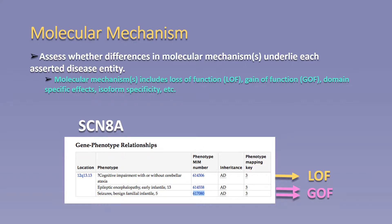The second criterion is molecular mechanism. Assessment of molecular mechanism begins at the gene level and includes differences such as loss of function versus gain of function mutations for each asserted disease entity, as observed for the example of the gene SCN8A. Other examples to consider would be domain-specific mutations or isoform-specific mutations that may occur between asserted disease entities. Sometimes the molecular mechanism is not always clear or is in question. In these cases, it is best to assess whether the disease entities asserted have overlapping variation in the gene of interest or distinct variants between the asserted disease entities. Overlap of variants between two asserted disease entities indicates a disease spectrum and lumping of those entities for a single curation. Distinct variants may indicate a difference in molecular mechanism, and the remaining criteria should be evaluated before making a formal split, especially in the absence of a defined molecular mechanism.